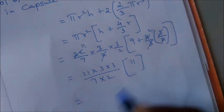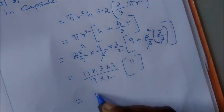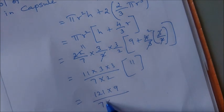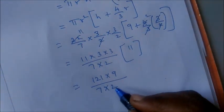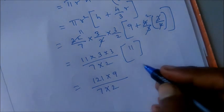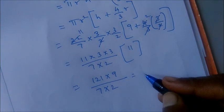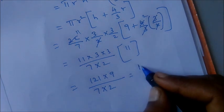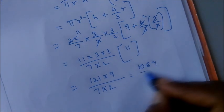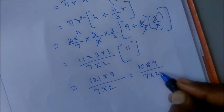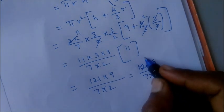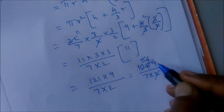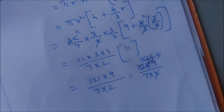So 11 into 3 into 3 divided by 7 into 2, balance is 9 plus 2 is 11. So 11 times 11 is 121 into 3 times 3 is 9, divided by 7 into 2 is 14. Now multiply, we get 1089. Then 2 table cancels, 2 table 5 times. 8 is 4 times, then again 9 is 4 times. Balance is 5 times.